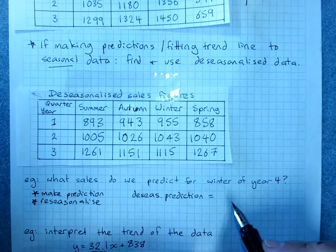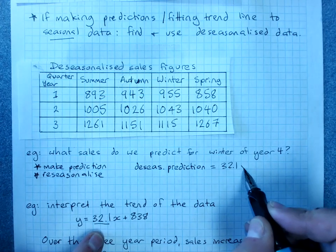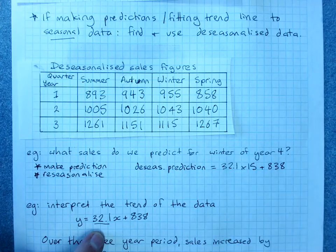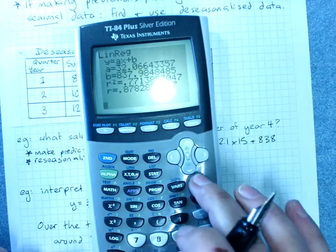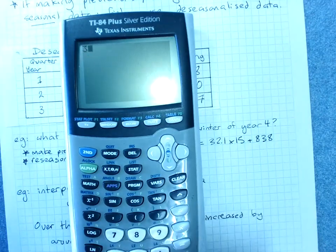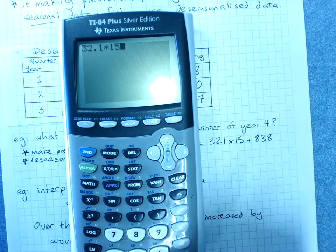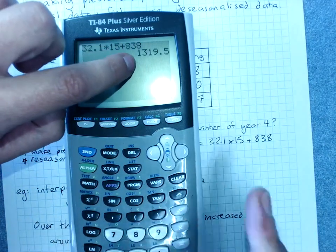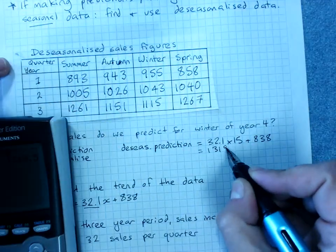So x is 15, 32.1 times 15, plus 838. If you'd put the y variables in, you could use your tables. So 32.1 times 15, plus 838, equals 1319.5.